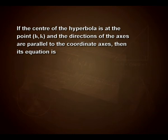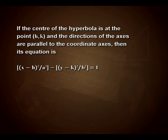If the center of the hyperbola is at the point (h, k) and the directions of the axes are parallel to the coordinate axes, then its equation is (x−h)²/a² − (y−k)²/b² = 1. So students, today we discussed about hyperbola and the definitions related to it. In the coming sessions we shall solve some examples involving hyperbola. Thank you.